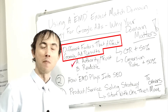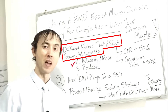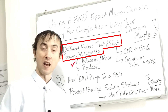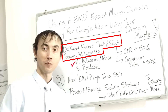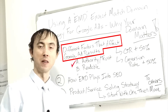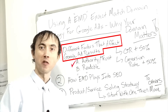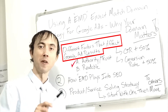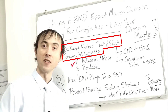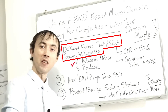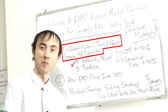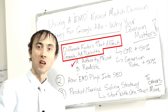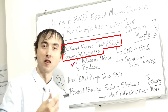You might say nobody reads the domain when they decide to click on an ad — yes, they do. There are studies that show that a good 10% or so are going to look at the display URL on your ad and decide from that whether or not they're actually going to click. They read the headline first, of course, and then they look at the domain to see if they should trust you.